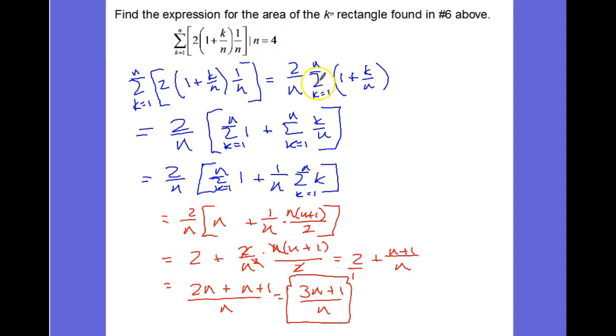If you wanted to find what it is when n is equal to 4, now we have a great formula we can just plug in. That would be 3 times 4 is 12, plus 1 is 13 over 4. What's great is we can find solutions like that for n equals any number given this formula.